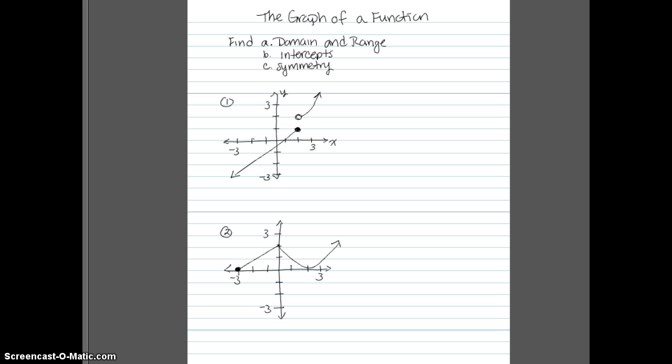So we'll start with the first graph here. We want to find the domain and range of this graph. Notice that this is in fact the graph of a function. If we draw a vertical line that goes right through these two points, this open circle means that this is a point not included on that curve. And this closed circle means that point is included. So a vertical line can pass through here but still only hit this one point. So it is in fact a function.